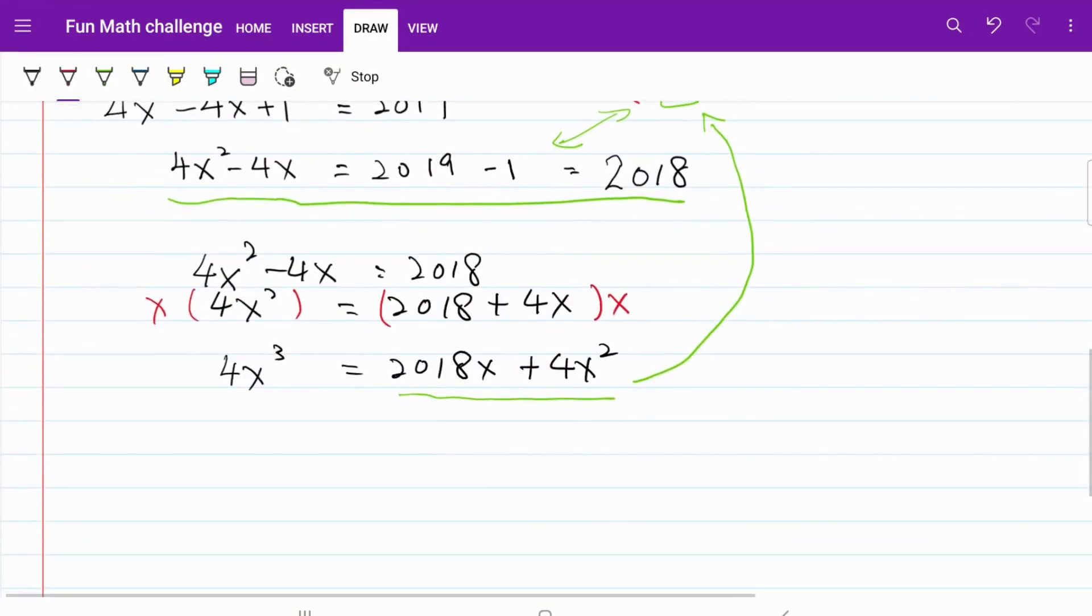With this substitution, my 4x cube becomes 2018x plus 4x square. And the remaining part of the expression remains the same. So I have minus 2,022x minus 2,019, and of course, the whole thing is raised to the power of 2,022.